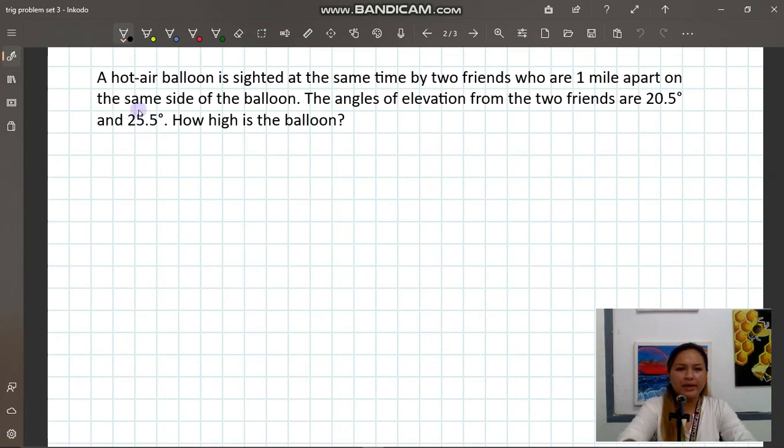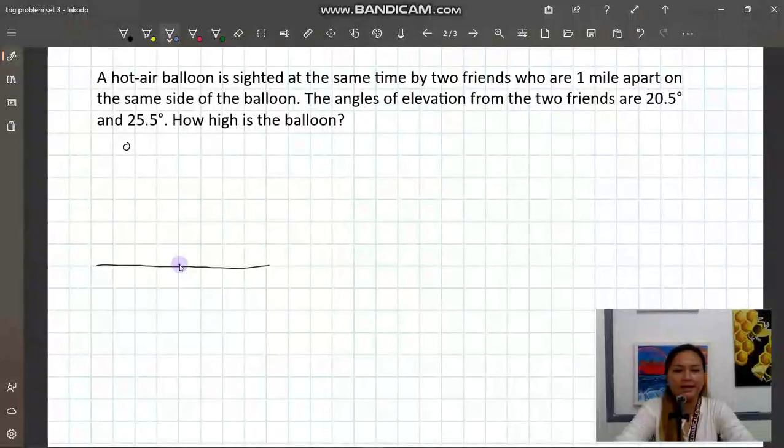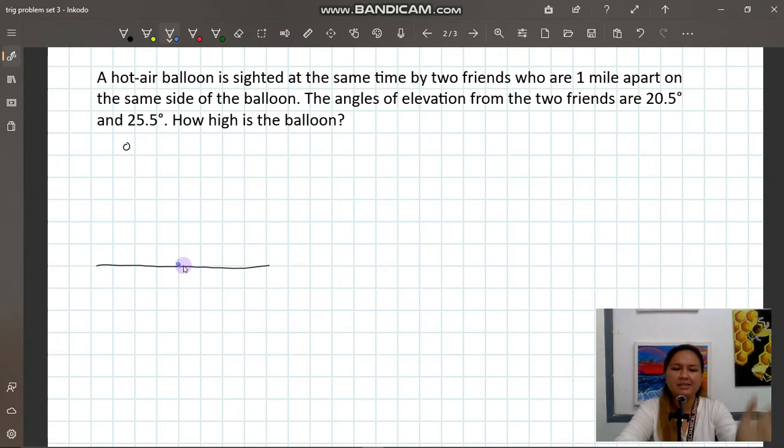We can make an illustration. This is our hot air balloon, or basically just a balloon. It's important to plot the details correctly and identify the given information. This is the balloon and then this is the ground. And then we have two friends.